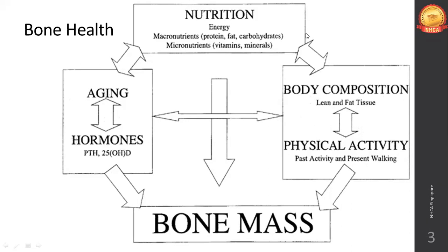Bone formation exceeds reabsorption in periods of growth such as childhood. It is relatively equal during early and middle adulthood, and slowly in aging adults it lowers down — bone resorption decreases. Vitamin D is also essential for bone health; it promotes calcium absorption in diet. When vitamin D and calcium-rich diet are taken together, they promote each other's absorption.